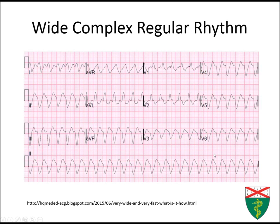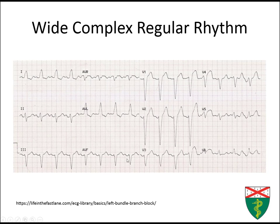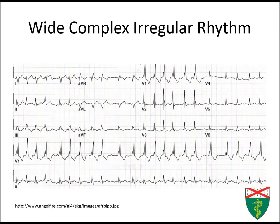Here we can see a wide complex regular rhythm — this is ventricular tachycardia, with a wide QRS marching out across the strip. Here's another example with clear P-waves before each QRS; this is a left bundle branch block, which we'll discuss later. And here we see an irregular wide complex — this is an individual with a right bundle branch block and atrial fibrillation. The initiation of conduction comes from multiple atrial foci seen in atrial fibrillation, but there is abnormal conduction due to the right bundle branch block.